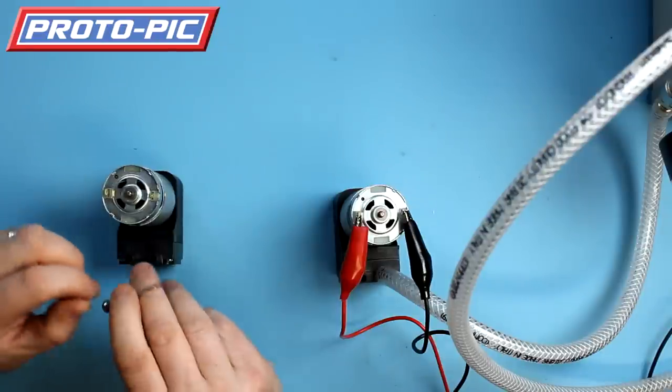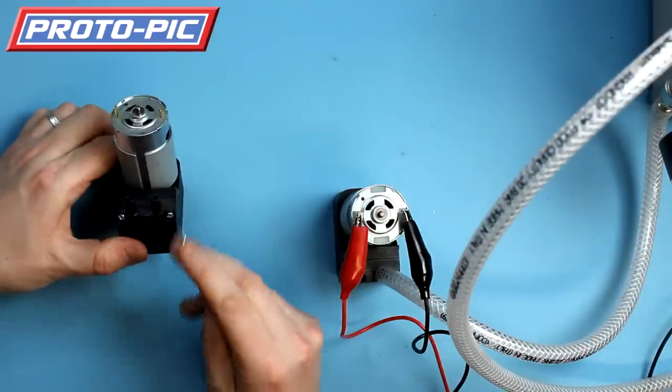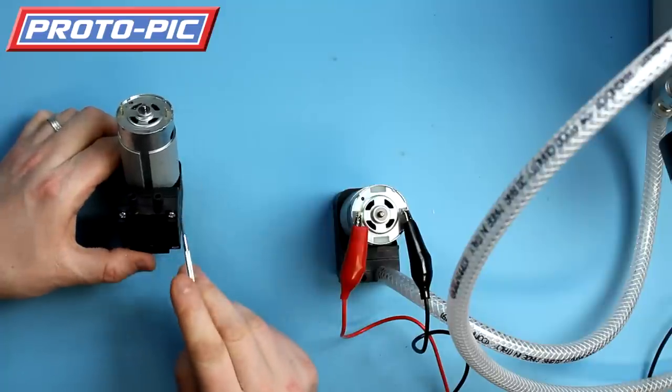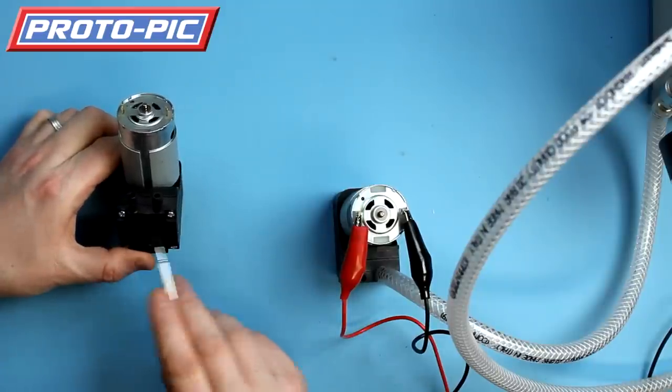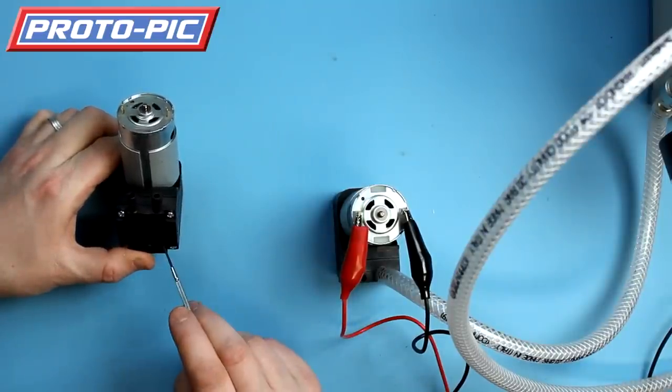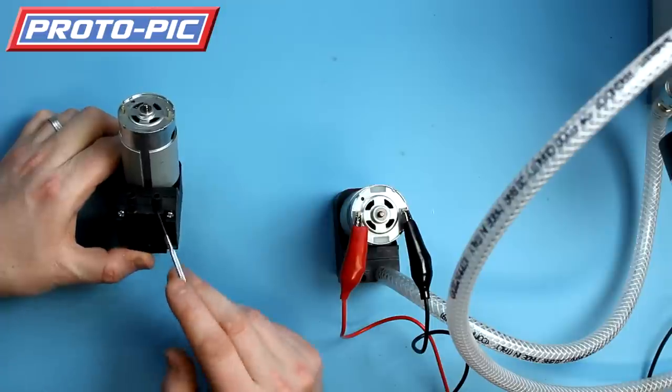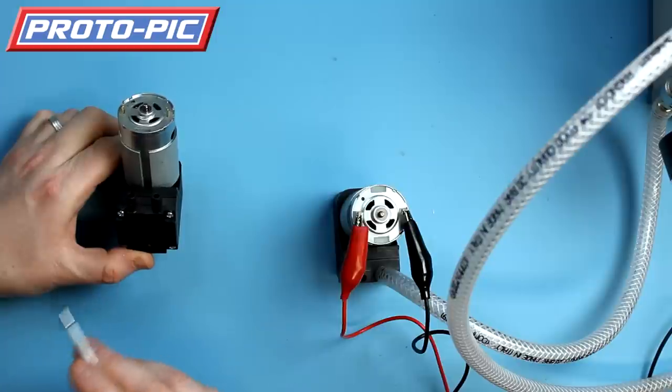If you connect it the wrong way around, the motor will turn and might fool you into thinking the pump is working correctly. But the impeller mechanism inside will be rotating in the wrong direction, and you won't get accurate vacuum pull. It won't be pulling air in the inlet, compressing, and pushing it out the outlet correctly.